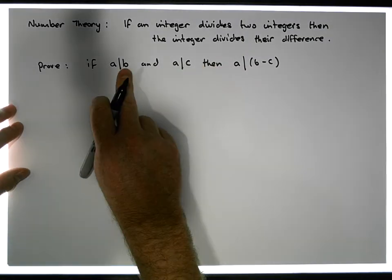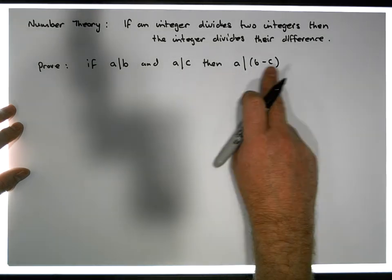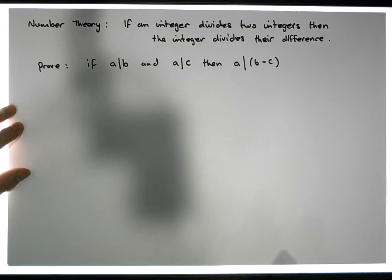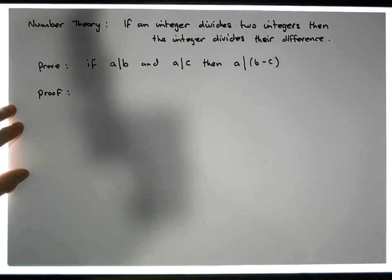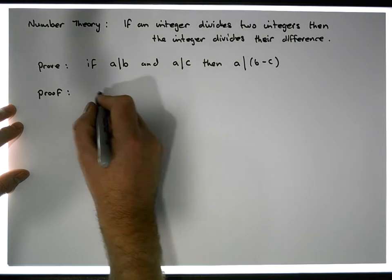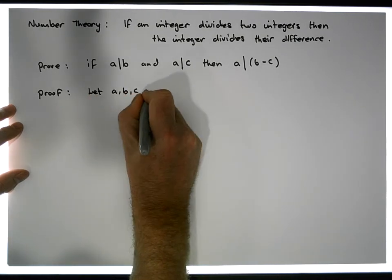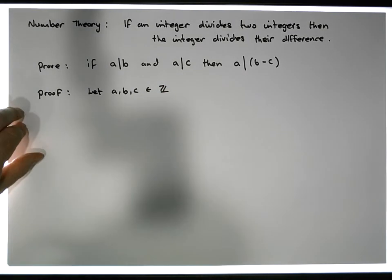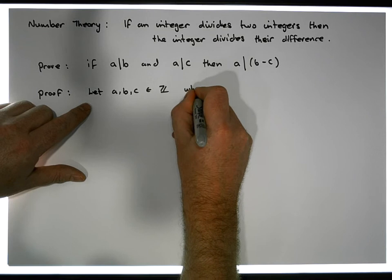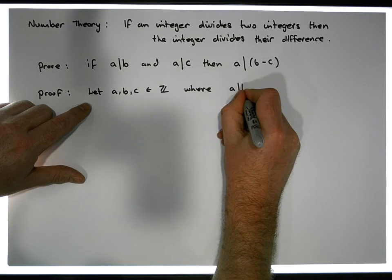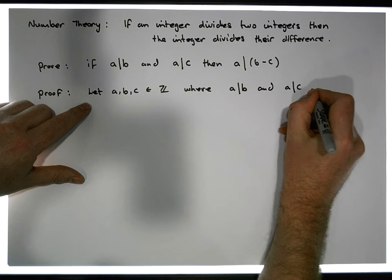So if we have an integer that divides one integer, and the same integer divides another, well then that same integer divides the difference between the two integers. So let's try to do a little proof of this particular fact here. Let's choose three integers — let A, B and C be elements of the integers. We have these three integers where we know that A divides B, and A divides the integer C.